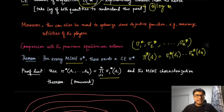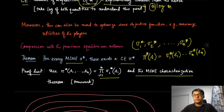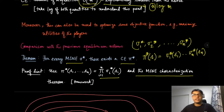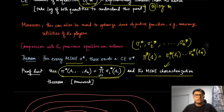I leave this as an exercise — it is not very difficult. As a hint, you need to use the MSNE characterization result, which states that for all strategies on the support of a mixed strategy Nash equilibrium, the expected utility must be the same, and greater than or equal to the expected utility of all strategies outside the support. Using this characterization and the product-form substitution for pi*, you can show that pi* is a correlated equilibrium.